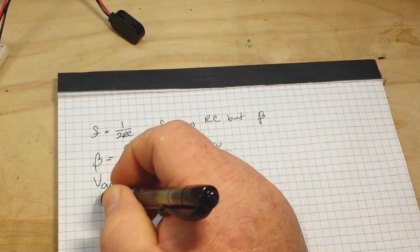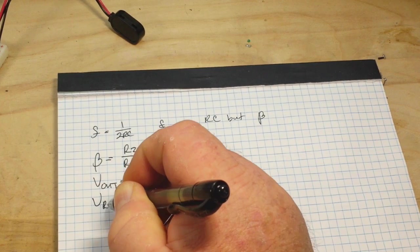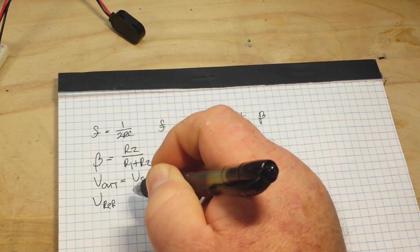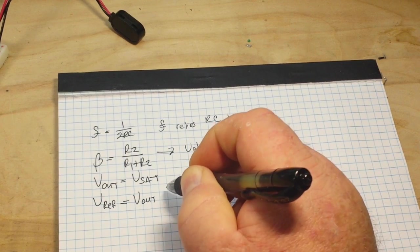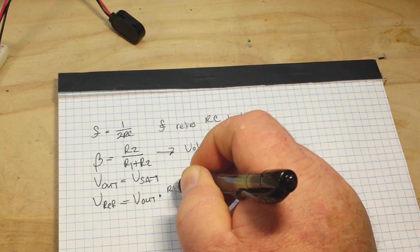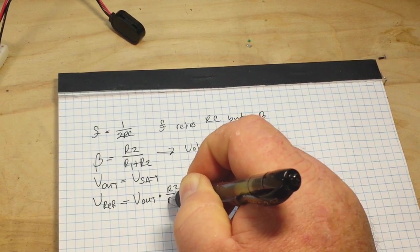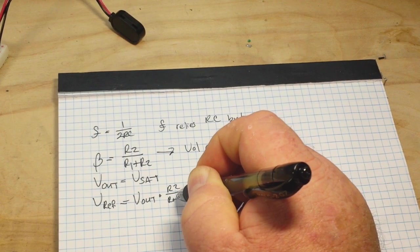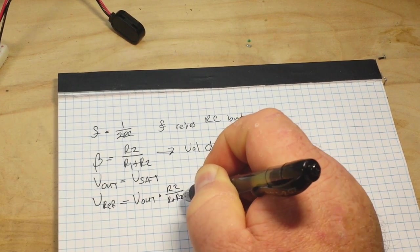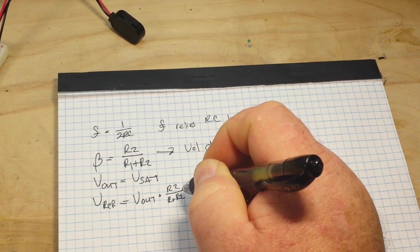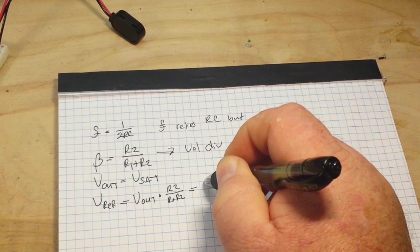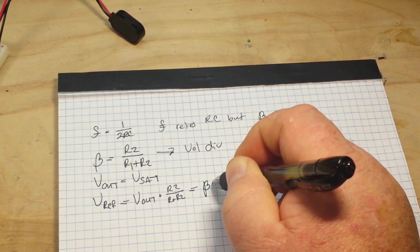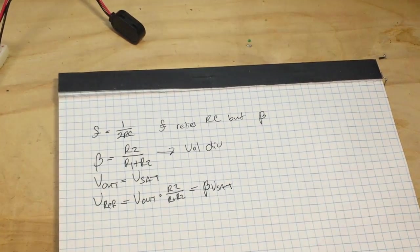And our Vref is equal to Vout times R2 over R1 plus R2. That's our feedback, remember that? And that will also equal β times Vsat.